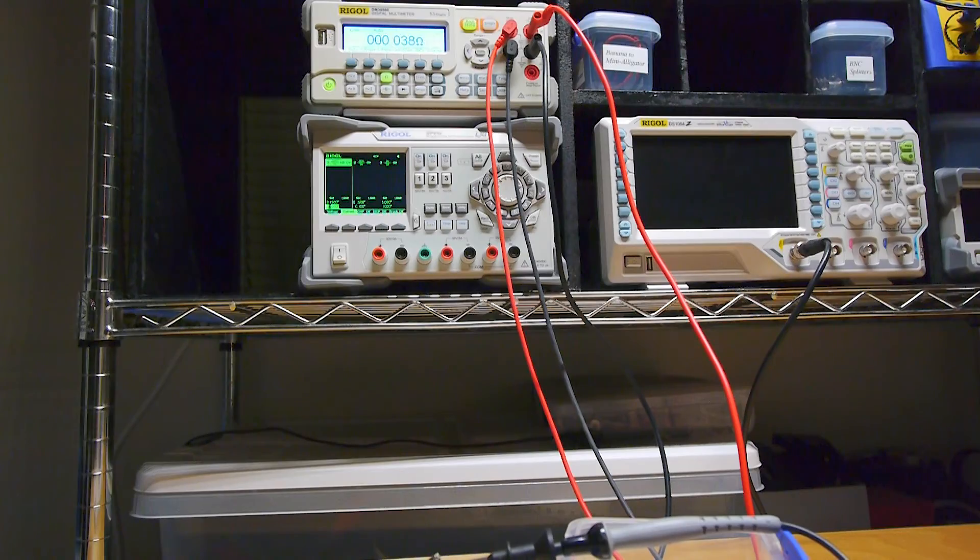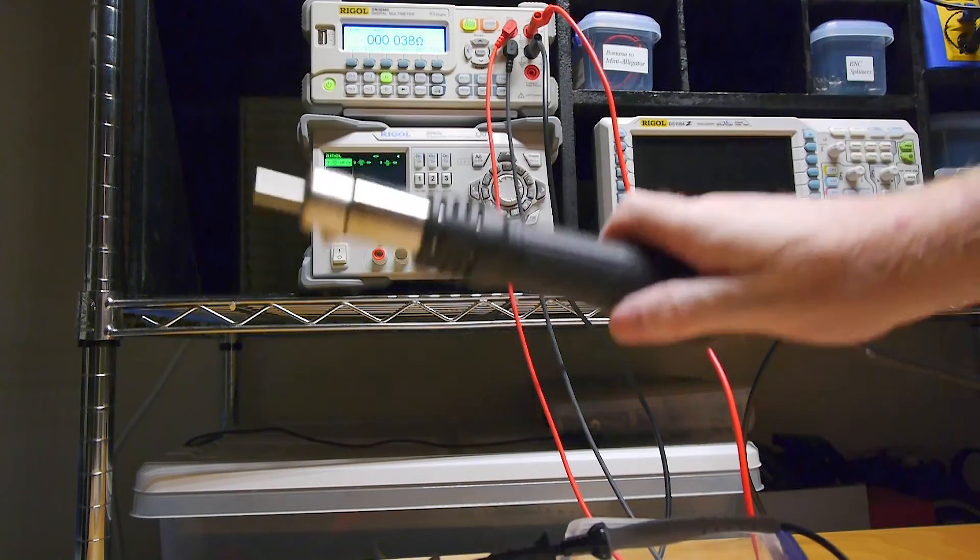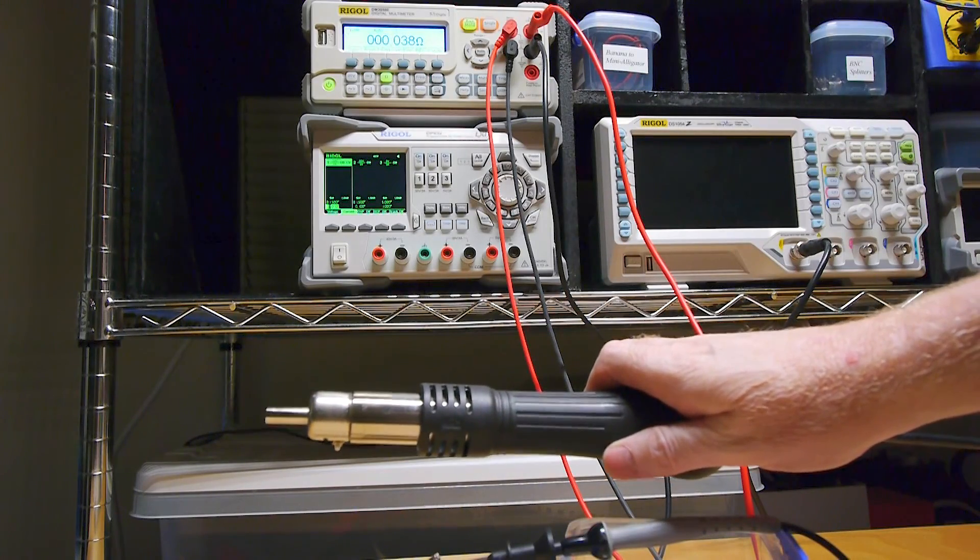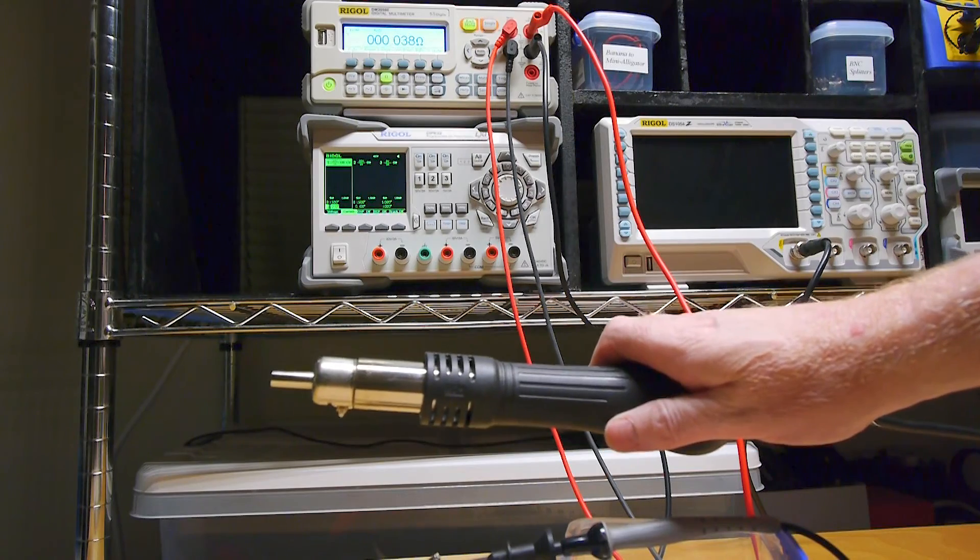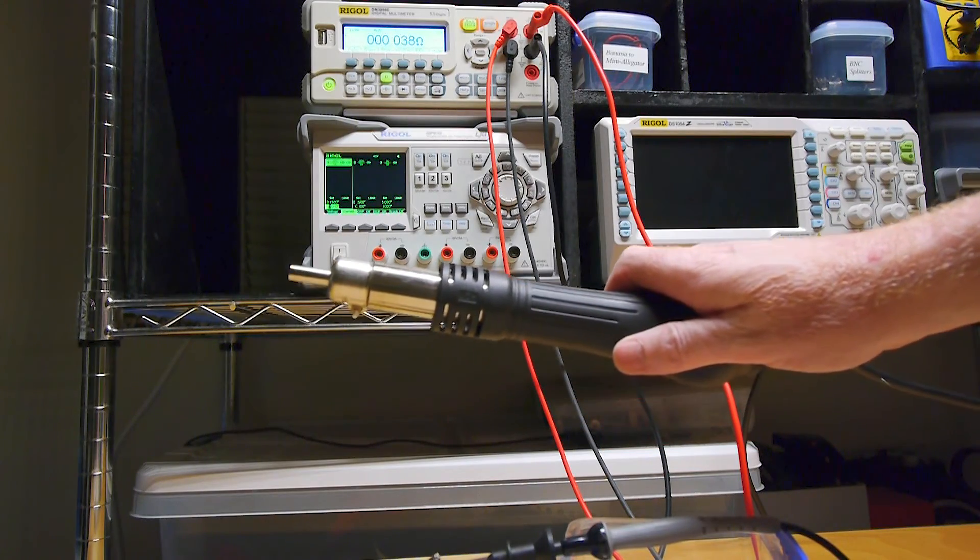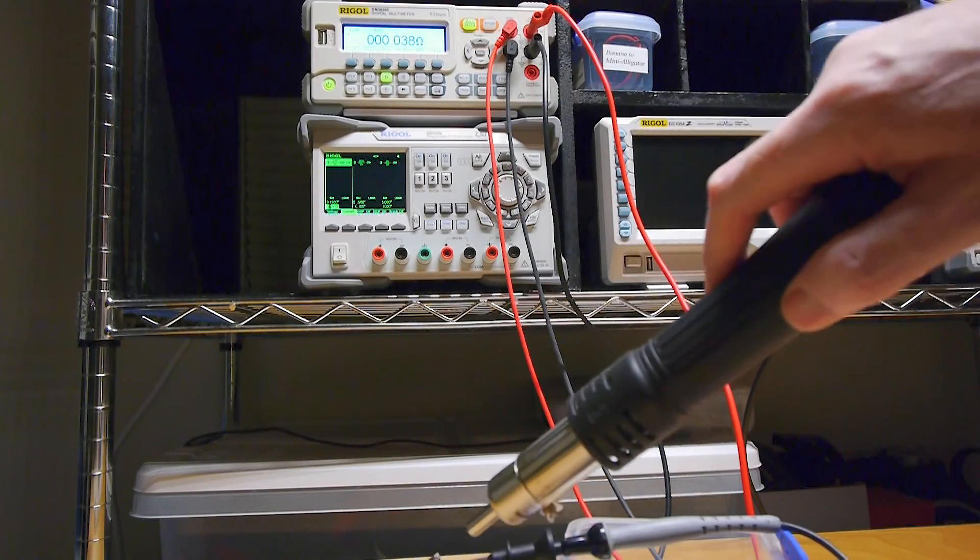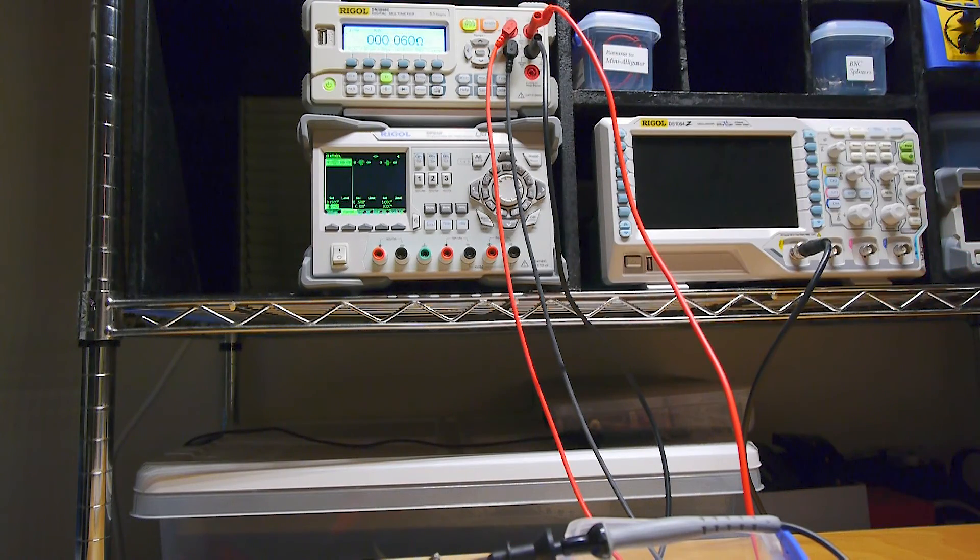You bring the hot air gun out, let it come up to temperature. And you'll see me first of all bring this close to it. And it's not having any effect. So there's no electromagnetic effect or the presence of metal causing it. But once I start heating it, resistance goes way up.